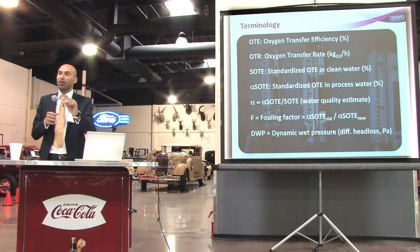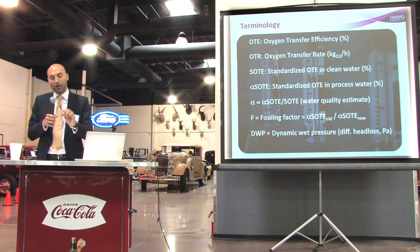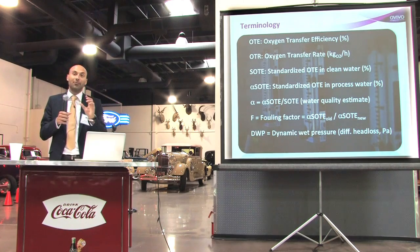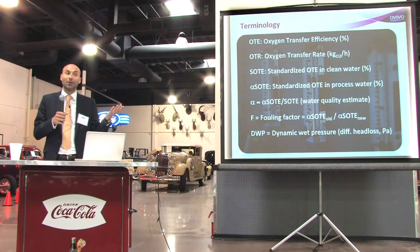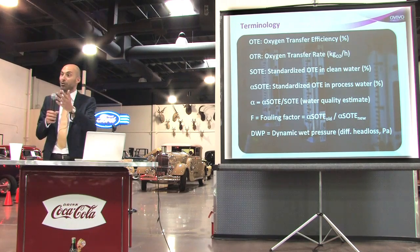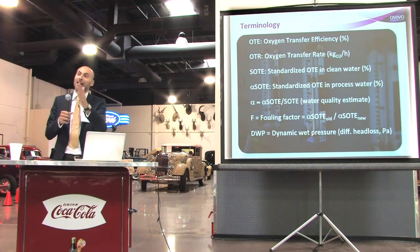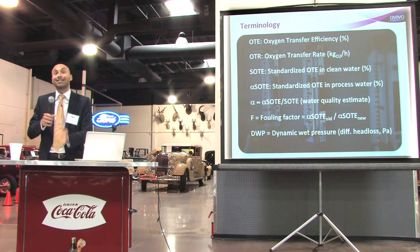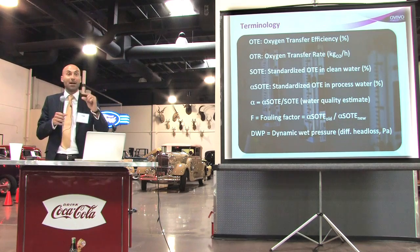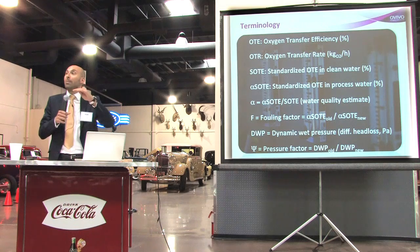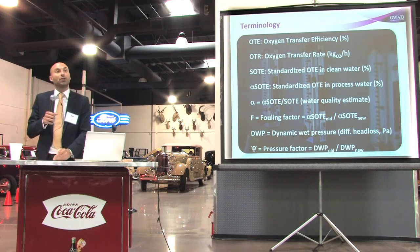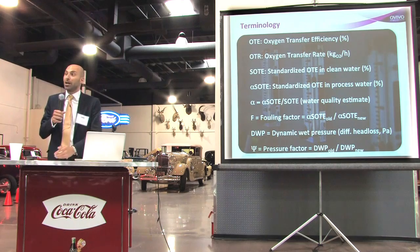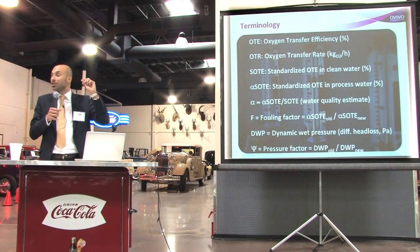The head loss across a diffuser is the dynamic wet pressure (DWP) — a critical parameter because blower selection depends first on discharge pressure, not size. Blowers cannot compress air, they blow it; if you don't have enough discharge pressure, the air won't come out. Over time, discharge pressure may creep up, potentially limiting the blower's ability to discharge air, so when sizing a blower today you must budget extra pressure to accommodate that future increase.